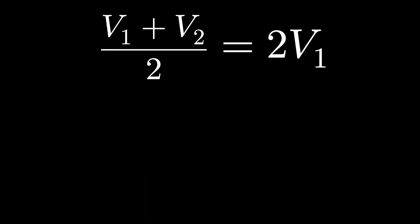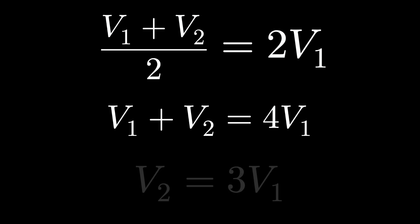A little bit of algebraic manipulation, V1 plus V2 should be 4V1, and V2 should be 3V1. Or in other words, we should run our second lap three times faster than the first lap to satisfy our conditions.